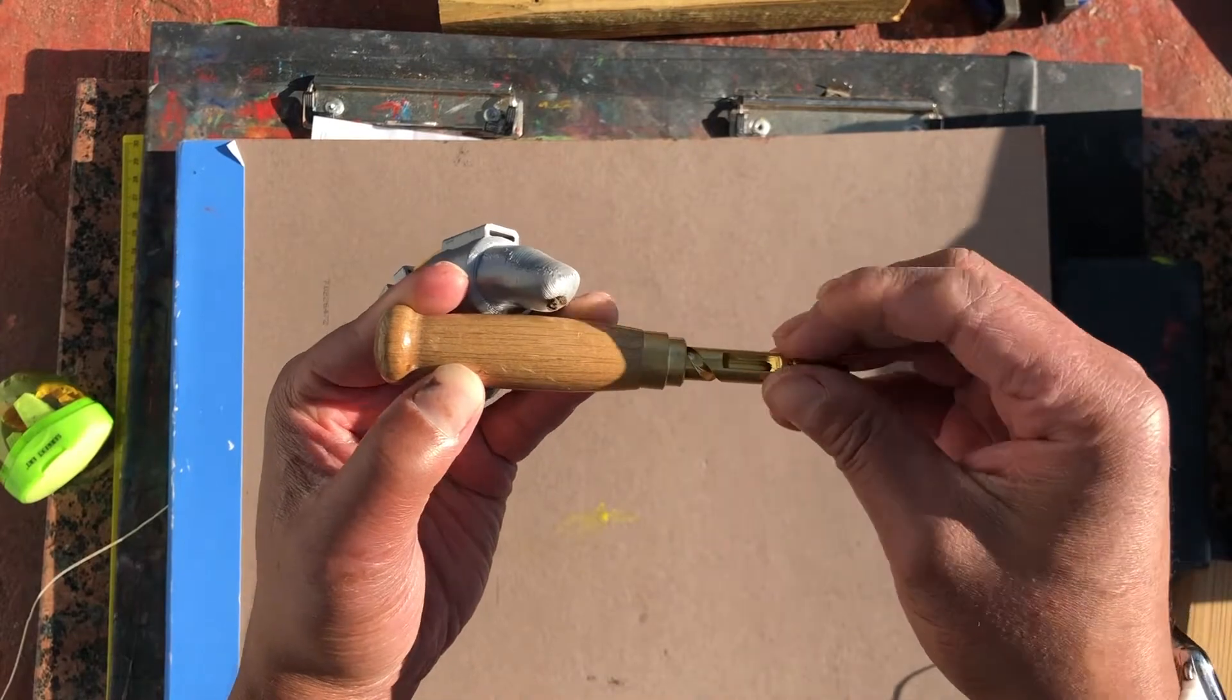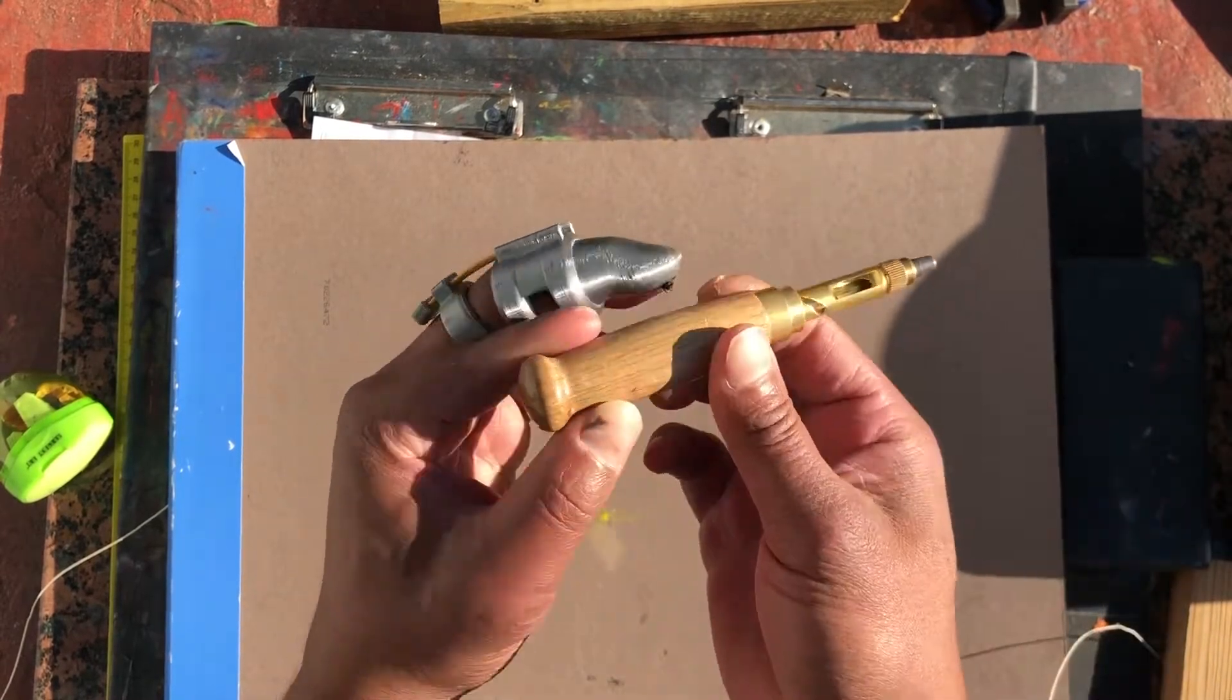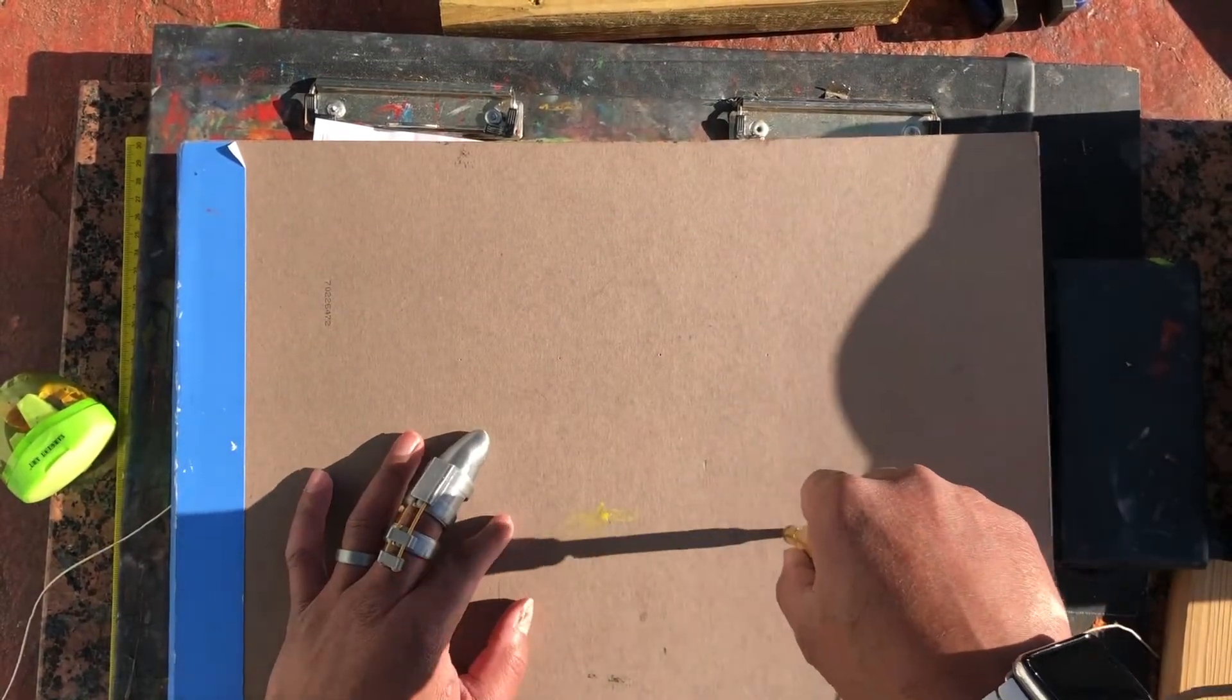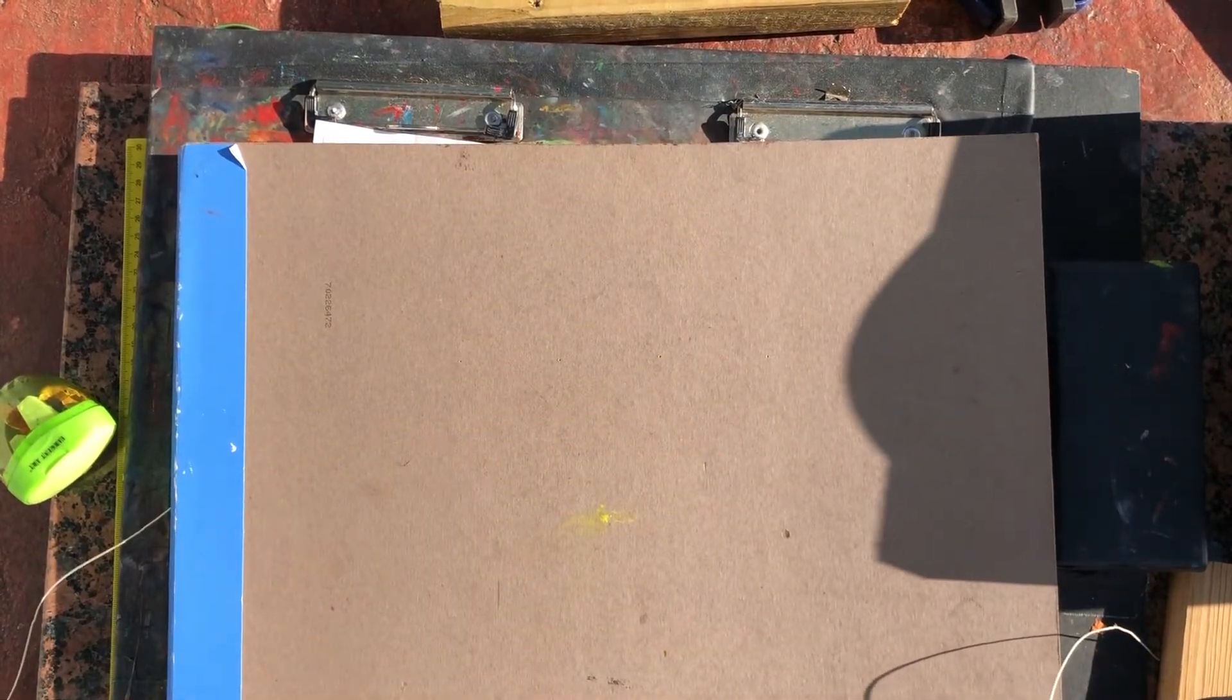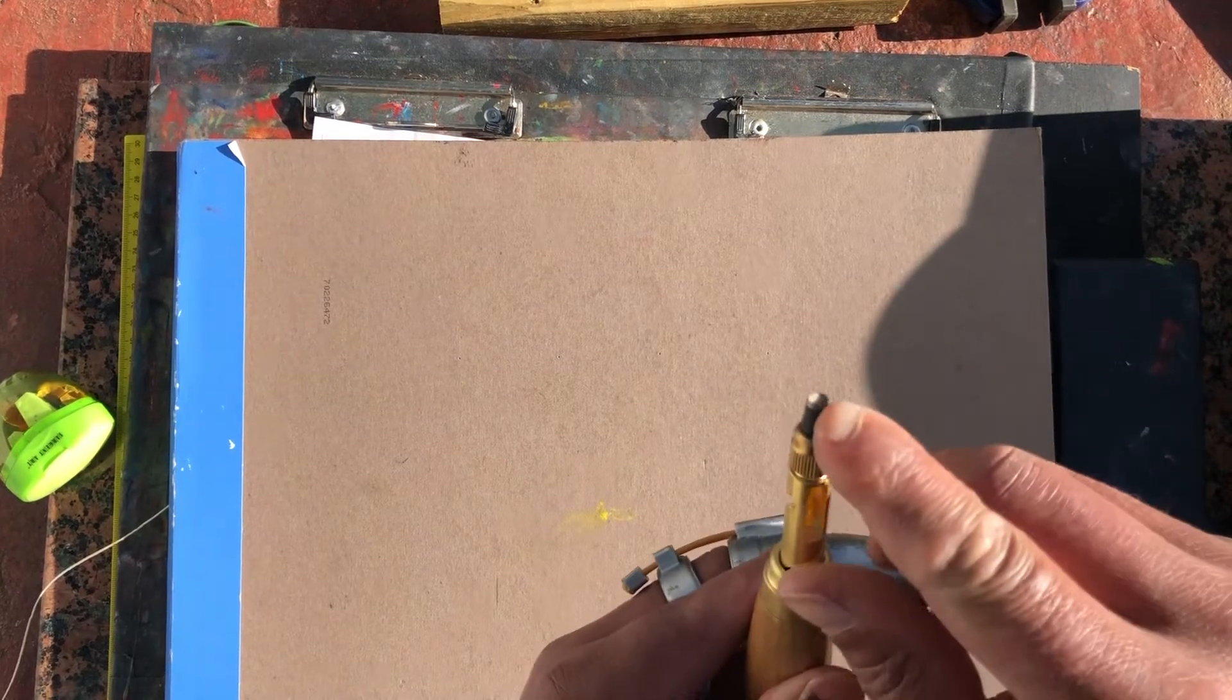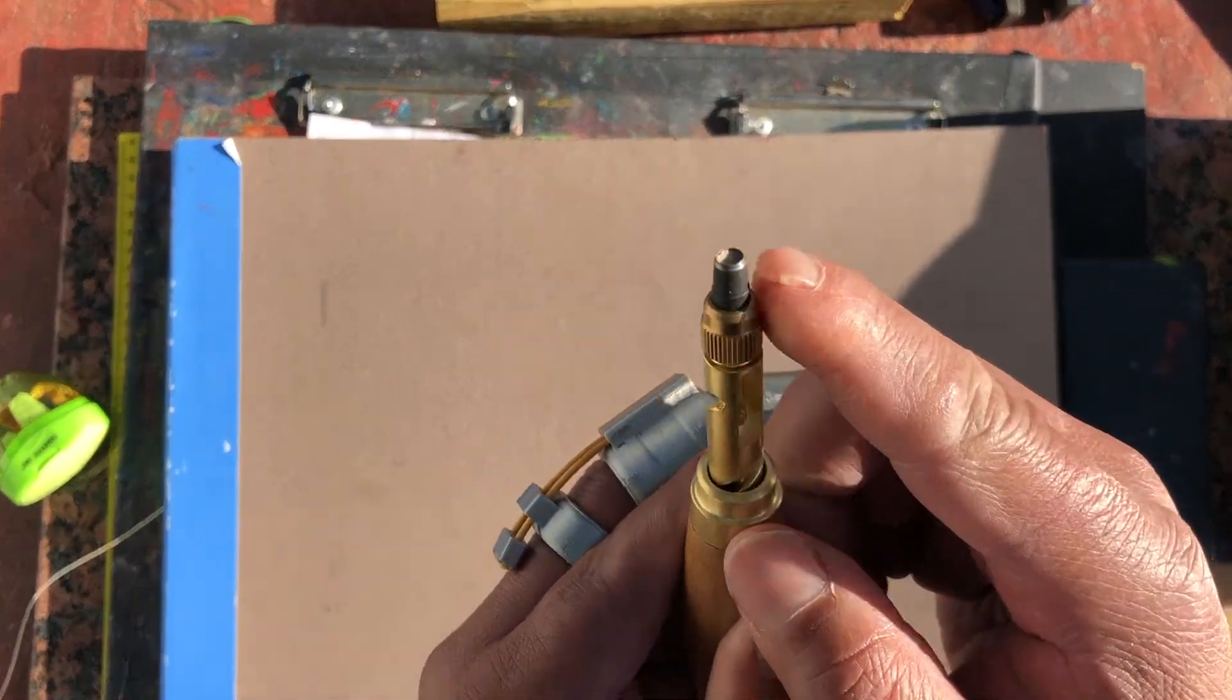So this is a hole punch. This is where you push and it will punch a hole. I will show you a close-up in a second here. These are very sharp, so I want to let you know that this is sharp.